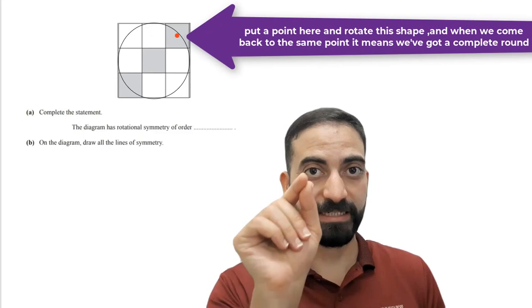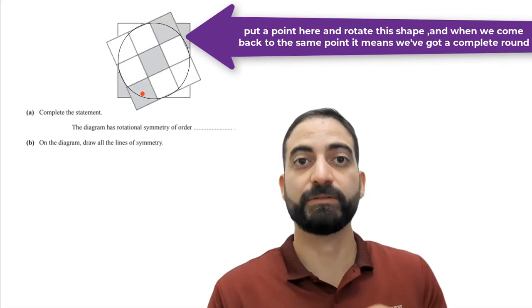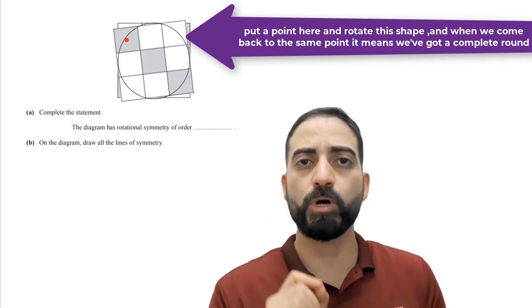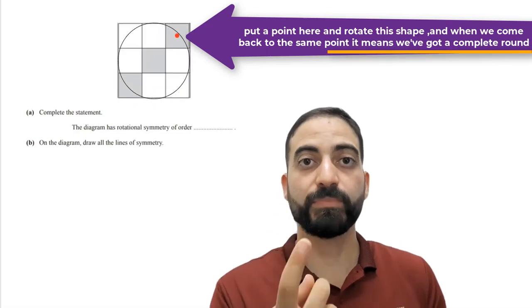We will put a point here and rotate this shape, and when we come back to the same point, it means we have got a complete round.